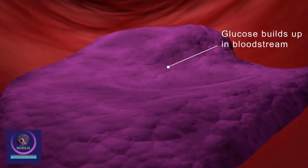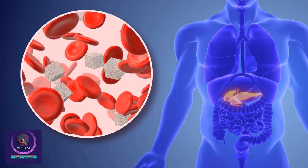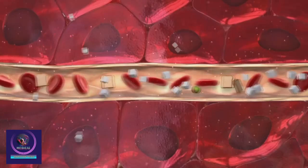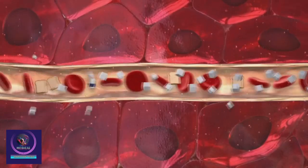Your pancreas also makes another hormone called glucagon, shown here as a white cube icon. Glucagon is made by the alpha cells in the pancreas, which release it into your bloodstream.